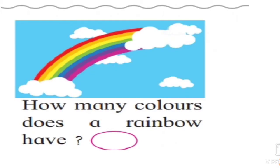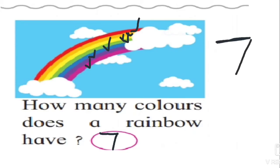See this picture — what is this? This is a rainbow. Have you seen a rainbow? Tell me, how many colors does a rainbow have? A rainbow has seven colors. Let's count: one, two, three, four, five, six, and seven. Let's write seven. How to write seven — first make a sleeping line like this, and then a slanting line.